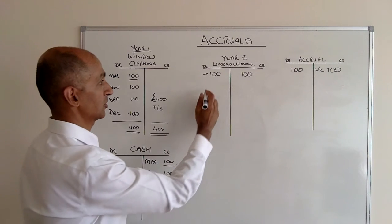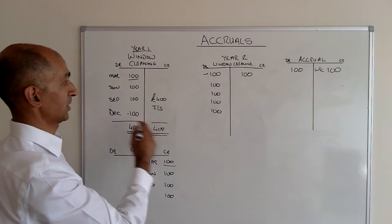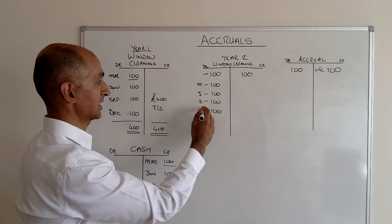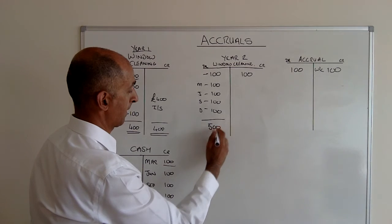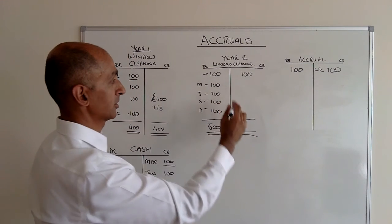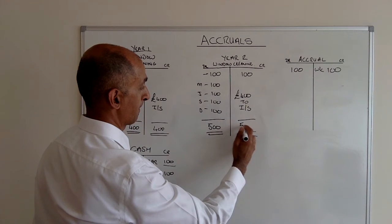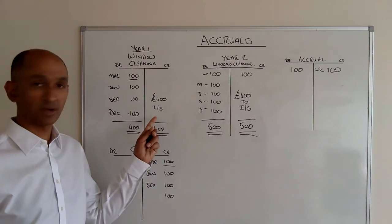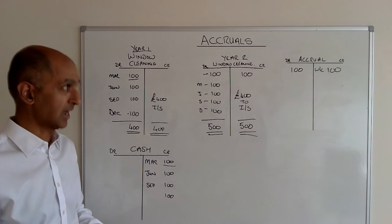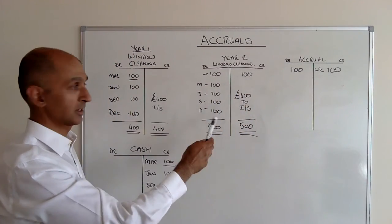So during the year, if you get your windows cleaned four times as normal — March, June, September, December — at the end of the year you have debits of 500, but you have the accrual offsetting of 100. So again, you only have 400 pounds going to the income statement. The costs in the profit and loss account would be 400 pounds, which is an accurate reflection of the costs actually incurred by the business. It was the accrual — putting money into the accrual and then using it to offset these amounts — that helped keep this in balance.